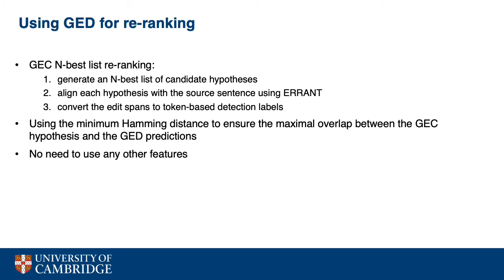The GEC system generates different candidates and outputs the one with the highest confidence score. However, it may not be the best correction. Therefore, we take advantage of the M-best list and employ a re-ranking approach using GED outputs. We first generate a 10-best list of candidates for each sentence, then align each candidate with the source sentence using ERRANT to extract the edits, and finally convert the edit spans to token-based detection labels. We re-rank the candidates based on the minimum Hamming distance, which ensures maximum overlap between GED and GEC systems. Our simple re-ranking method can also be applied to any number of hypotheses from multiple systems.